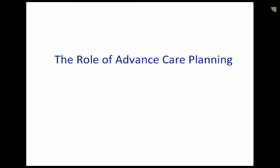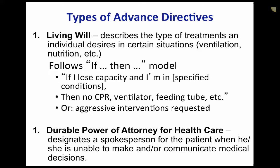Let's talk now about the role of advanced care planning. There are two types of advanced directives to ensure such a right to refuse. First, there is a living will, which is an instructional document that describes the types of treatments an individual desires in certain situations, such as ventilation and nutrition. It follows an if-and-then model — for example, if I lose capacity and I'm in a certain specified condition, then I don't want any CPR, ventilator, feeding tubes, etc. Or the person may request aggressive interventions in the previously specified condition. The durable power of attorney for health care designates a spokesperson for the patient when he or she is unable to make or communicate medical decisions for themselves.